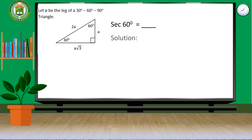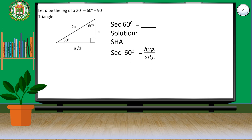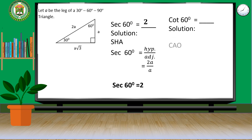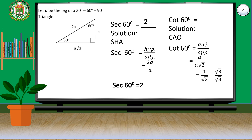For secant 60 degrees using 'Sha': hypotenuse 2A over adjacent A, canceling A gives secant 60 degrees equals 2. For cotangent 60 degrees using 'Cow': adjacent A over opposite A square root of 3, canceling A gives 1 over square root of 3. Rationalizing by multiplying by square root of 3 over square root of 3, cotangent 60 degrees equals square root of 3 over 3.